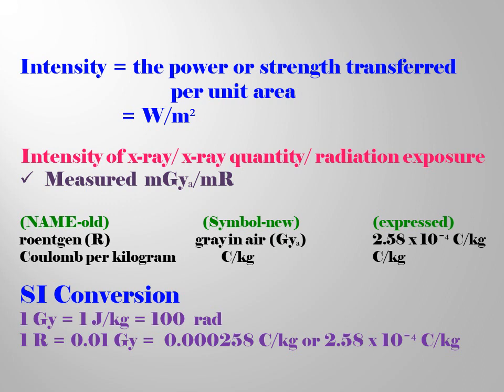The international system of units conversion: 1 gray equals 1 joule per kg, equals 100 rad.